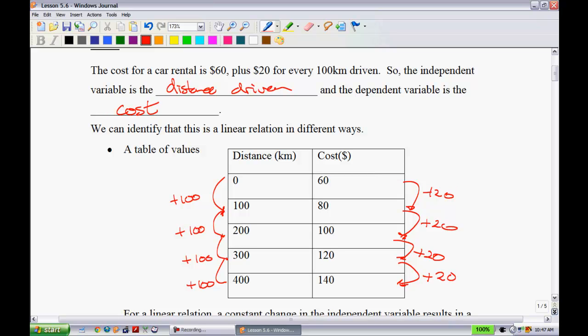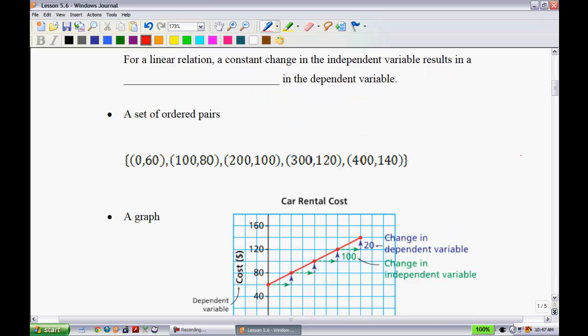If, for instance, I saw that on this side it was going up by 20 on this one, and then 30 on the next one, and so on, then that would not be linear. It could be some different type that we might look at in the years to come. What we know is that when you have a linear relation and there's a constant change in the independent variable, your x variable, that's going to also result in a constant change in the dependent variable. That's what we just saw with that example.